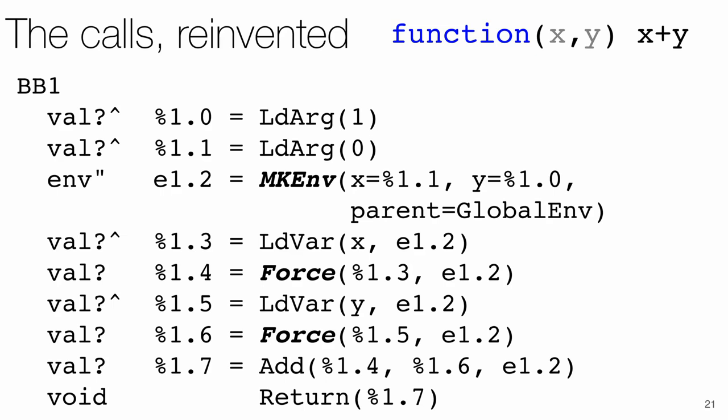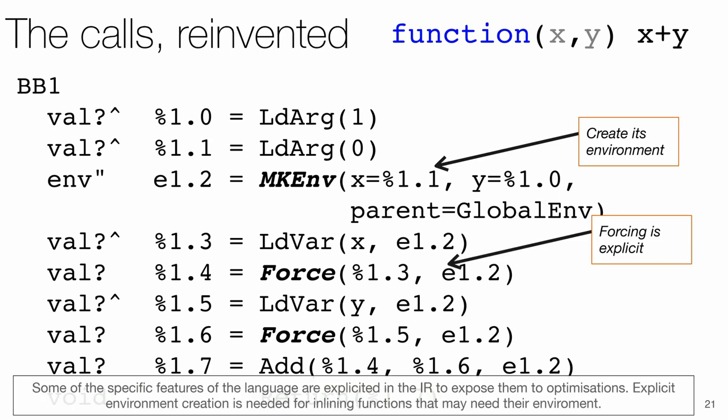We simply have to deal with calls. Ideally, we would like to just create the arguments and jump to the callee. However, in R, a new environment is created implicitly when calling a function, and promises are forced implicitly when accessed. To help us reason about R, we made these explicit by introducing instructions to create and manipulate environments, and create and force promises. The slide shows a simplified piece of Peer code for the function that adds its argument. We invented a new calling convention. The function's matched arguments are left for it on the operand stack, and the function is called right away. It's the callee that has to create its own environment.